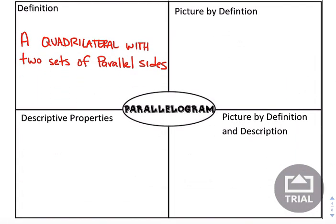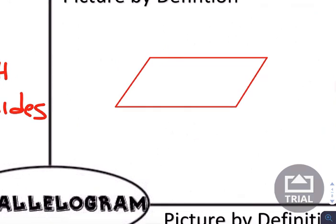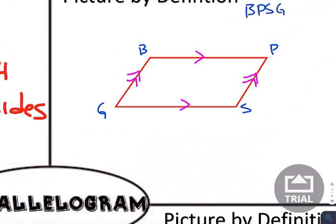Let's talk about parallelogram. Hopefully you're noticing that as we get a more specific shape, there are more properties that happen because you have the shape. In terms of the simple basic definition, if you have a parallelogram, what that means is you have a four-sided shape — a quadrilateral — with two sets of parallel sides. In terms of what that looks like, we have a shape that looks like a tilted rectangle, with top and bottom parallel to each other, and the left-hand and right-hand sides parallel as well. This one gets called VPSG, parallelogram.